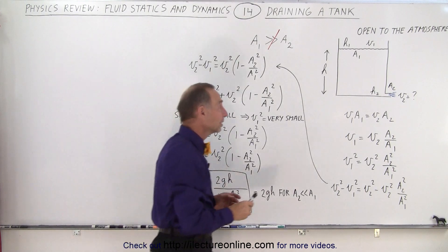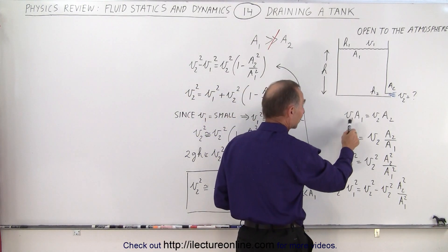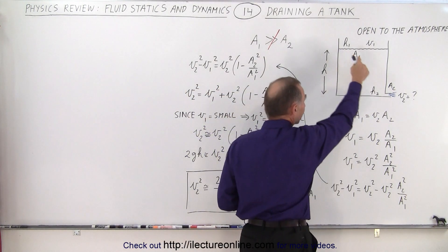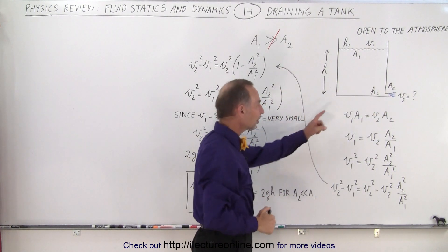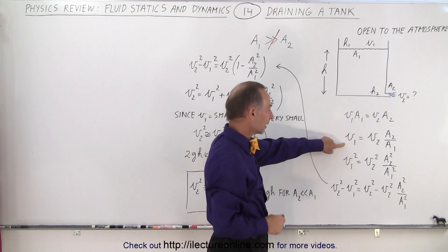We're starting with the same equation where the flow rate is simply the velocity times the cross-sectional area, and of course that's going to be the same for the top and the bottom. And if we solve that equation for v1, it turns out to be like this.